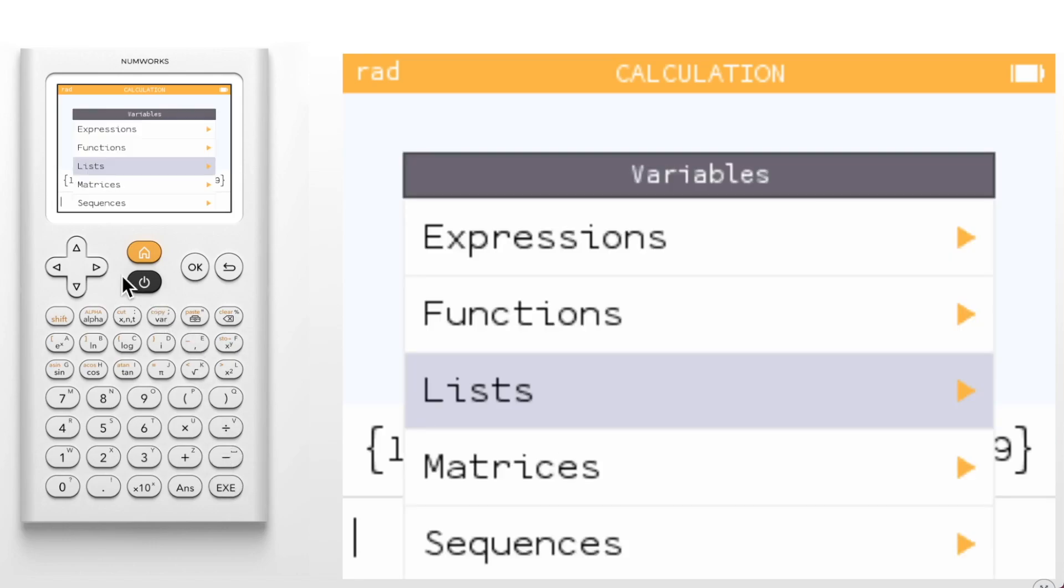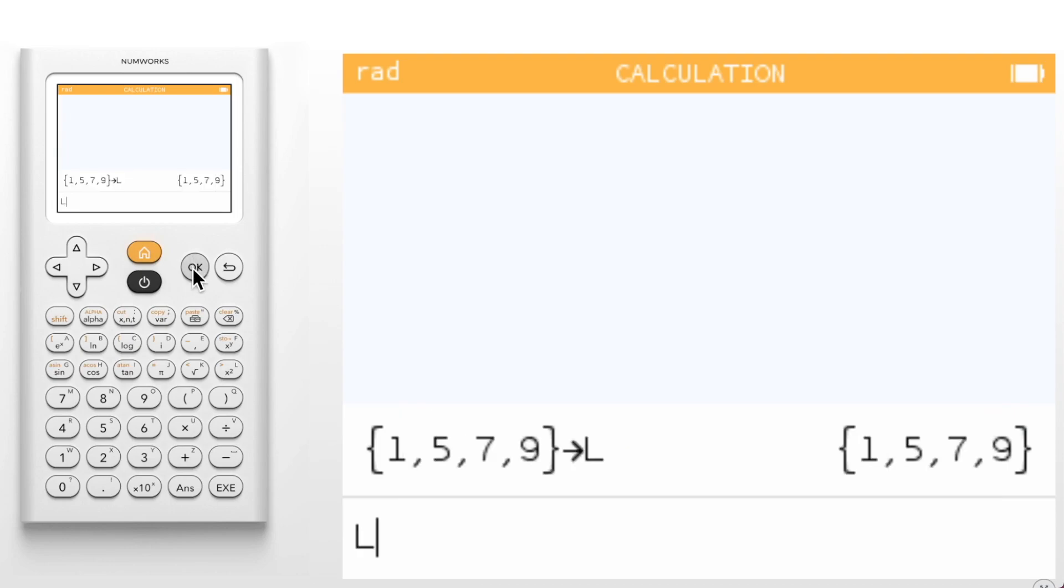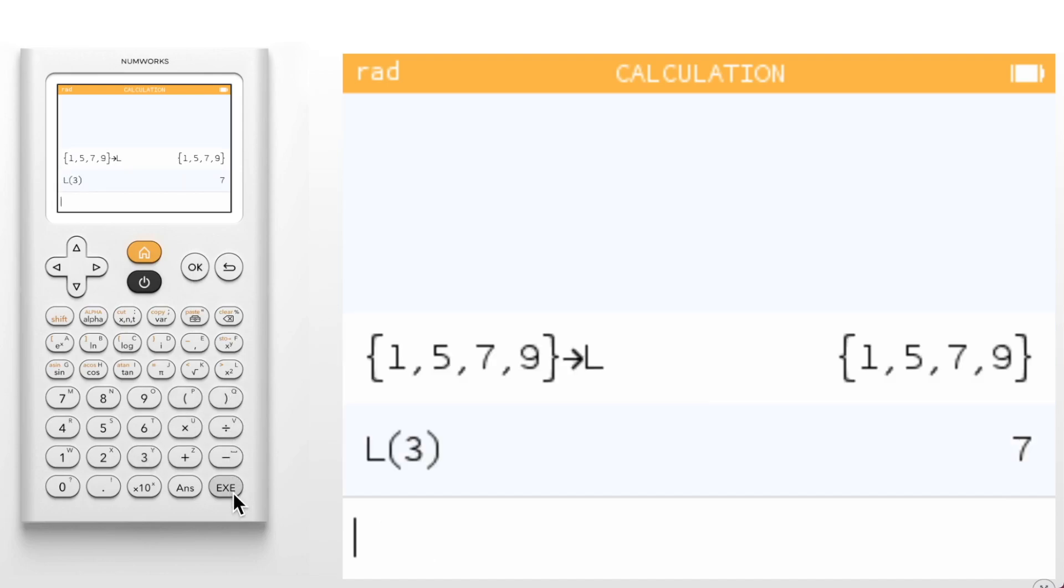Let's create a new list. We separate each element with a comma. It may be helpful to store this list using the arrow key, and I'll call this list capital L. Now we can call an element using parentheses. Do note that in all lists, the index of the first element is 1. So for example, L(3) gives us the third element of list L, which is 7.